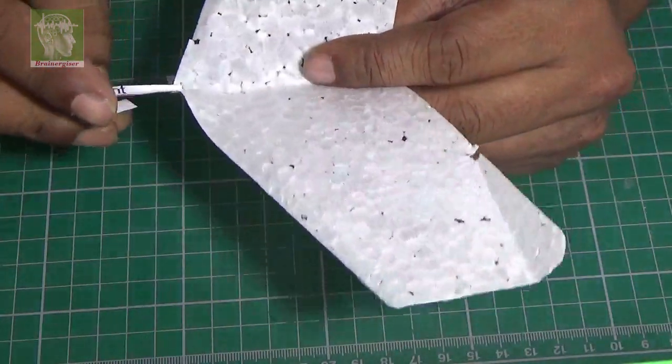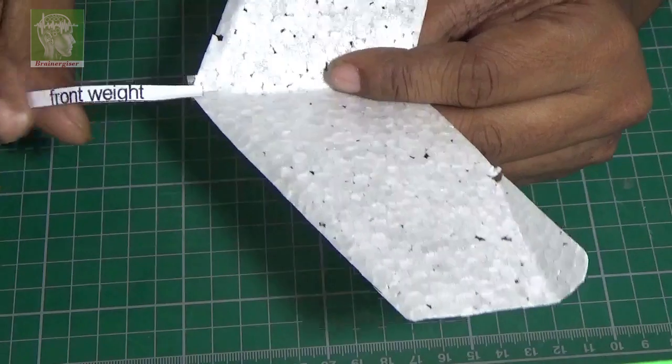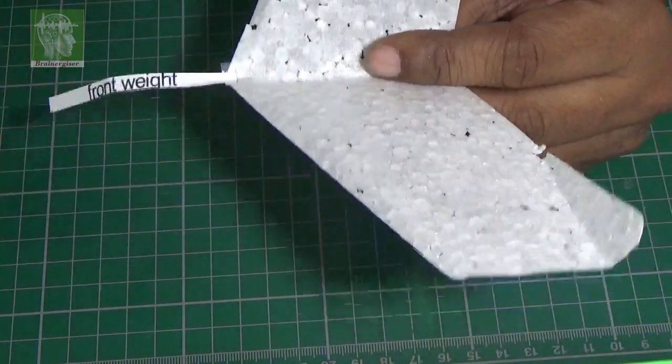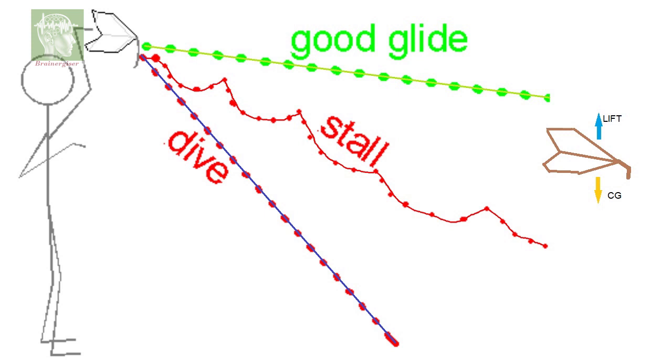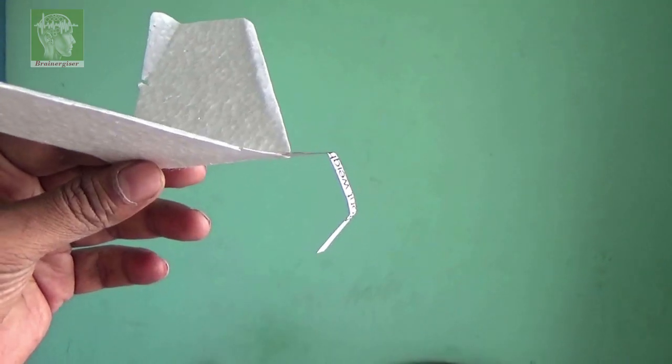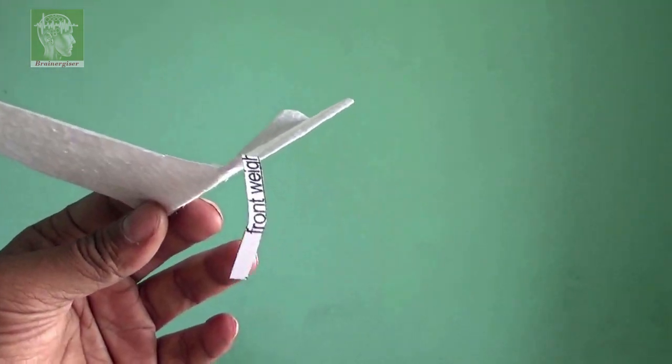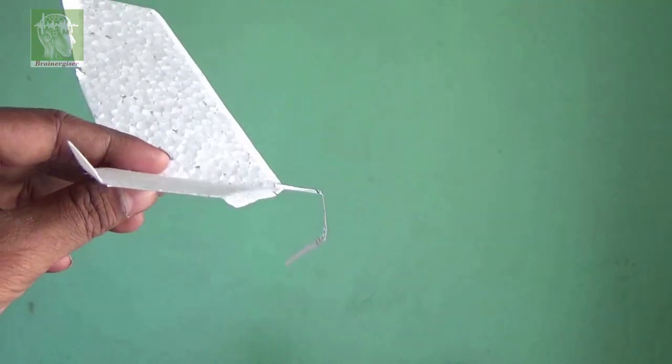When it is straight, CG is at the front. You may need to bend it to adjust the CG. The CG should be exactly below the lift point for a perfect glide. What happened if CG is in the front? It will dive. If CG you move back, you may get stall effect. But if it is perfect below the lift area then it will glide straight. So I have bended like this to get my perfect CG after giving three or four trials.